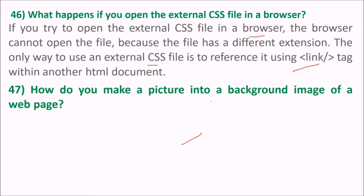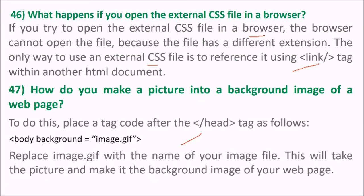How do you make a picture the background image of a webpage? Place a tag after the head tag as follows: use the body tag with background equal to your image filename, for example image.jpg. Replace image.jpg with the name of your actual image file. This will take the picture and make it the background image of your webpage.